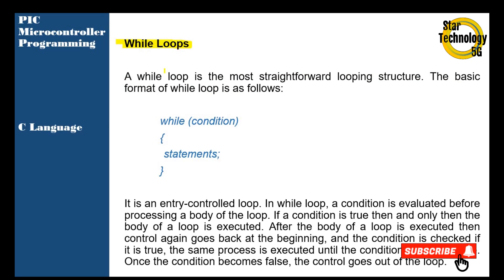A while loop is a more straightforward loop structure. The basic format is: while condition, then statement. It is an entry control loop. In a while loop, the condition is evaluated before processing the body of the loop. If the condition is true, then and only then the body of the loop is executed. After the body is executed, the control goes back to the beginning and the condition is checked again. This repeats until the condition becomes false, then control exits the loop.